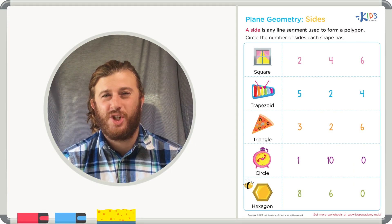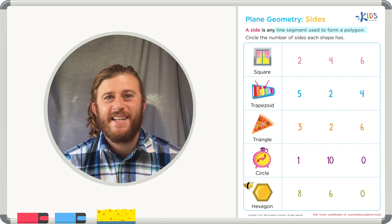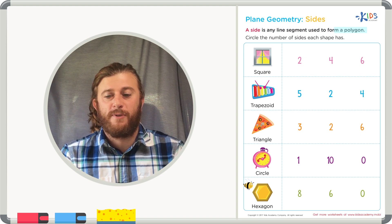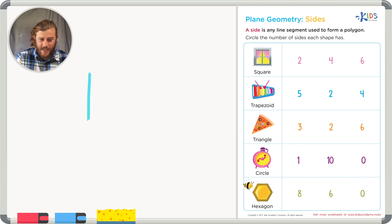And today we're going to be talking about geometry and sides. A side is any line segment used to form a polygon or a shape with sides. Let's take a look at this example.